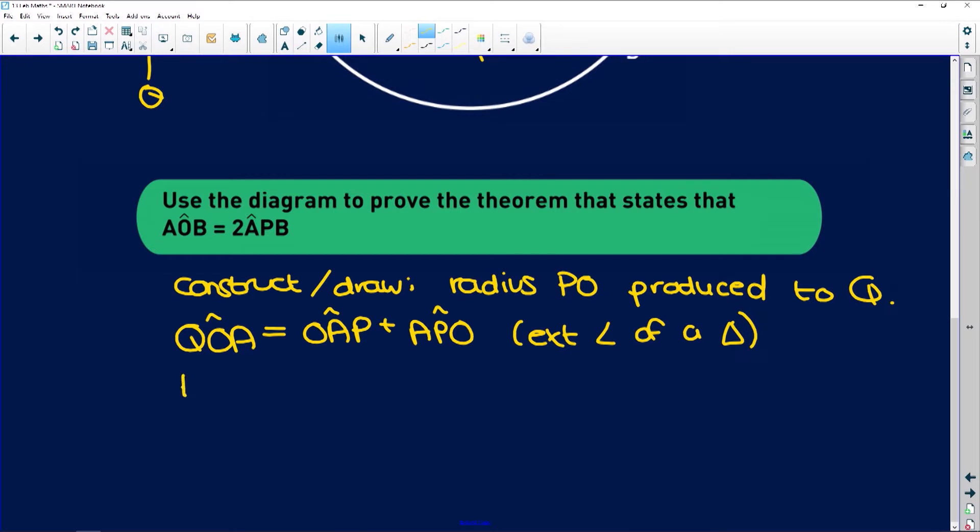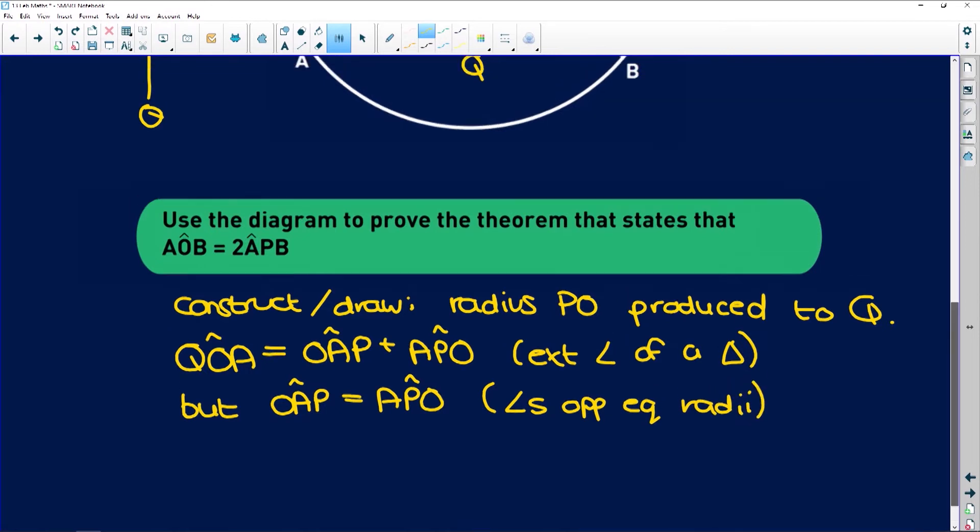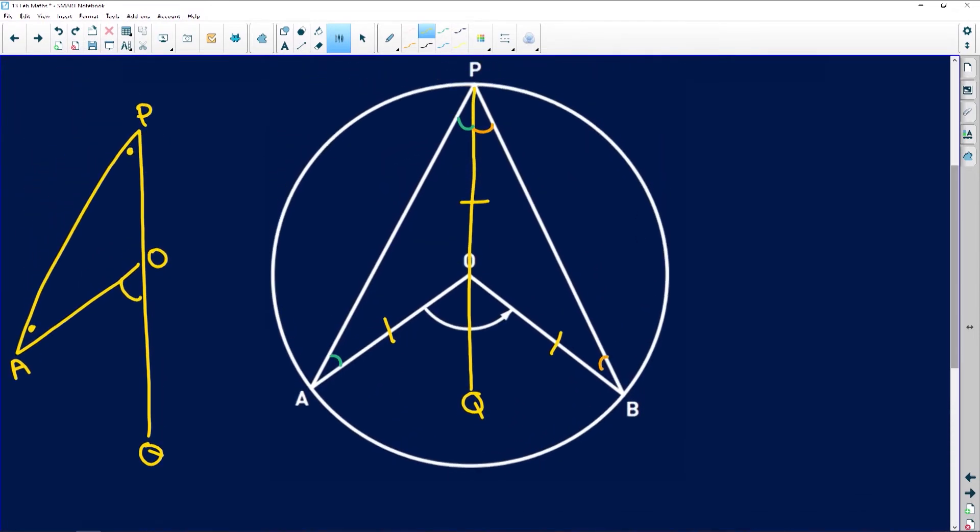Then you can say, but that OAP is equal to APO. Why? Because they are angles opposite equal radii. Very important. These are these two angles over here. These ones in green that I've highlighted.